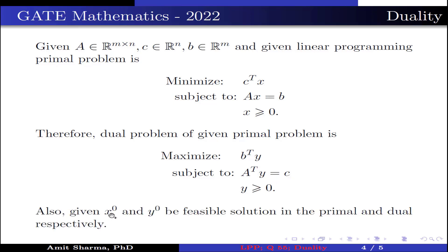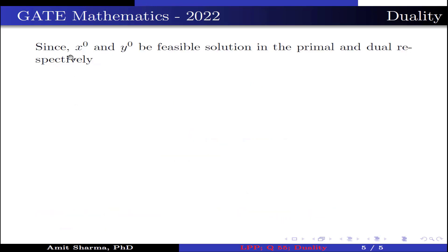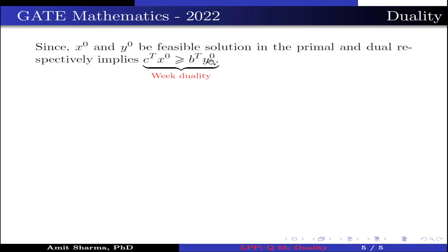Since x0 and y0 are feasible solutions of the primal and dual respectively, this implies C^T x0 ≥ b^T y0 because of the weak duality principle. Therefore, option A is true.